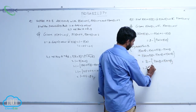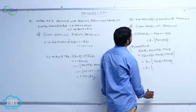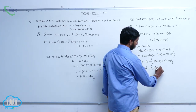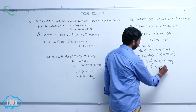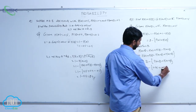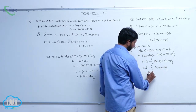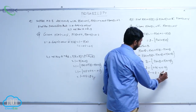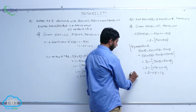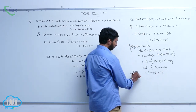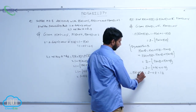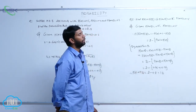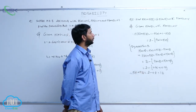This is equal to 2 minus of 0.65 plus 0.15, which is 2 minus 0.8, equal to 1.2. Therefore, P of A bar plus P of B bar is equal to 1.2.